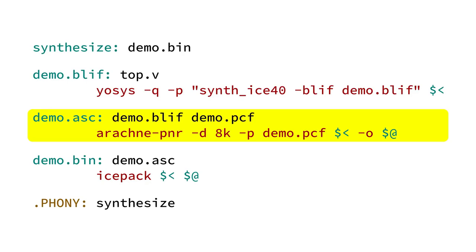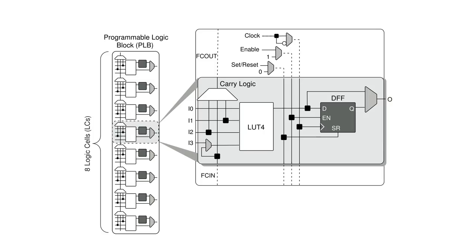The second step in the synthesis process is performed by Arachne-PNR, and this tool's job is to provide three key functions: packing, placing, and routing. The packing process involves taking the logic cells declared in the BLIF file and packing them together into logic tiles, because in the ICE40 each logic tile contains eight logic cells. We want to find the most optimal arrangement of logic cells into the minimum number of tiles, reducing scattering by co-locating related functionality.